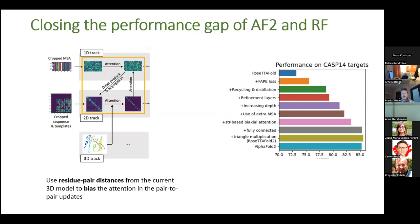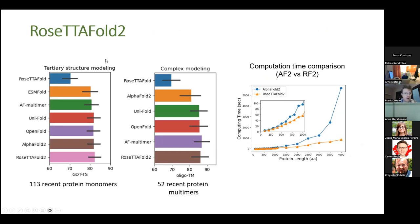We now call this RoseTTAFold2, and it seems to be performing in line with AlphaFold. When we compare on a very recent subset of structures newer than the training sets of all these approaches — ensuring independent validation — RoseTTAFold2 is in line with all monomer structure prediction methods and for protein complexes as well, perhaps slightly behind AlphaFold. Because this is a completely different architecture without expensive O(L³) triangle attention updates, this model scales significantly better than AlphaFold.